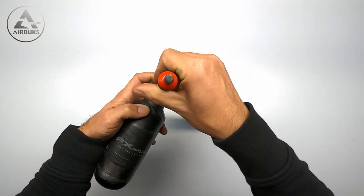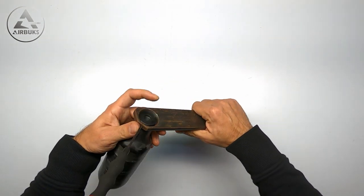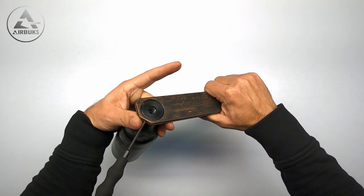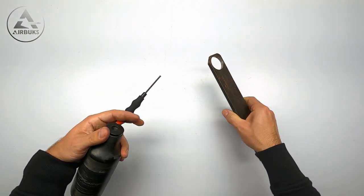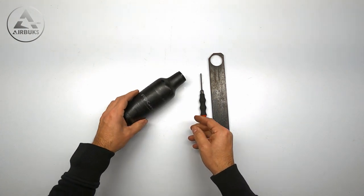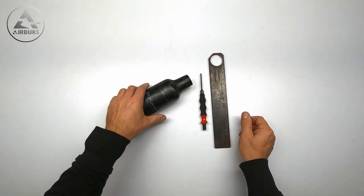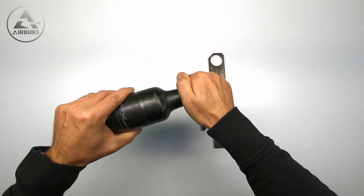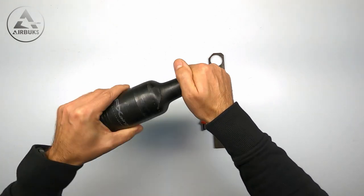This goes into that little hole and it gives you the leverage you need to undo the valve itself. Now for the purpose of this video and for easy handling I've loosened everything already so it's easier for me to show it to you on camera. Nothing is glued so you can just take it out like this.